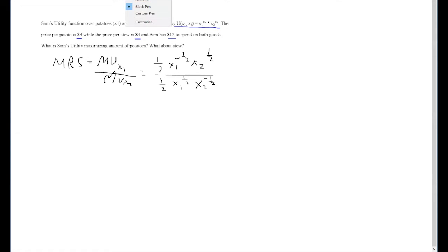Again, this equation on its own may seem daunting, but as we said before, we can get rid of these 1 halfs and simplify given these exponents. When we do so, we're left with x2 over x1 as our MRS.